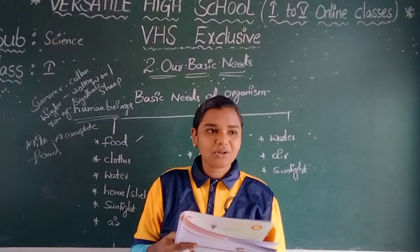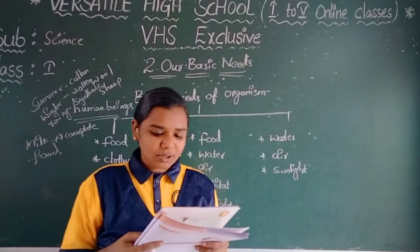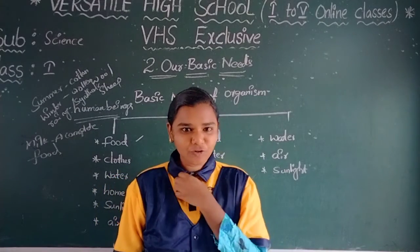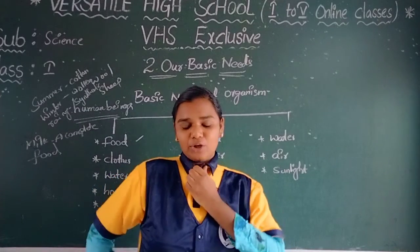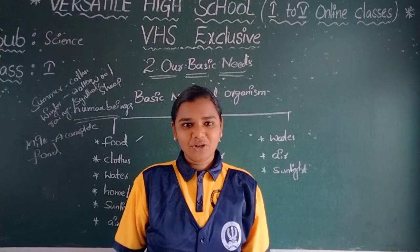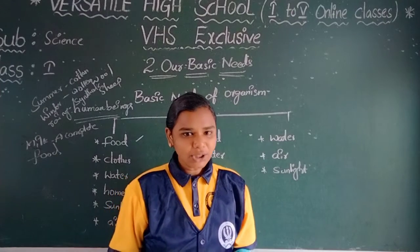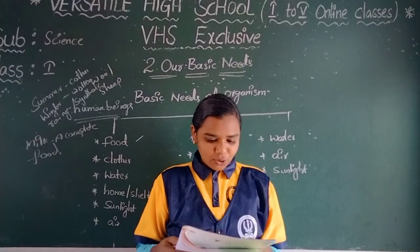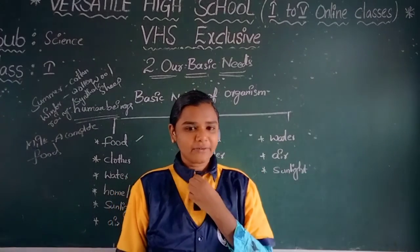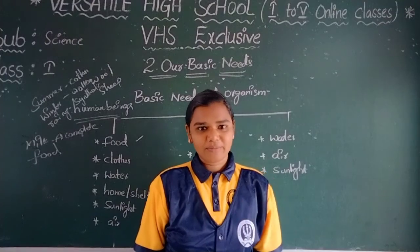Children wear special clothes to school. These special clothes are called a uniform. I am wearing uniform. Each school has a different uniform — for example, this is our school uniform. Some other schools have different uniforms as well.